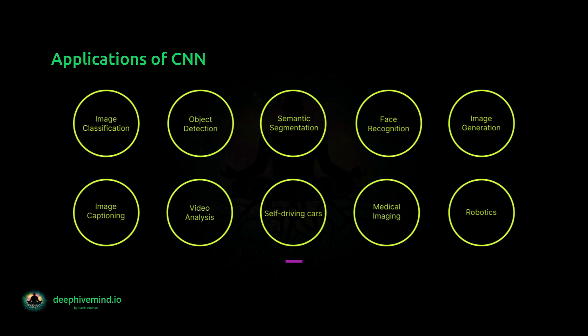CNNs can be used for object detection and recognition in self-driving cars, helping the car to understand and interact with the environment. CNNs can be used for medical imaging tasks, such as image segmentation and diagnosis, to help with early detection and treatment of diseases. CNNs can also be used in robotics to help robots understand and interact with the environment, such as object detection and grasping.